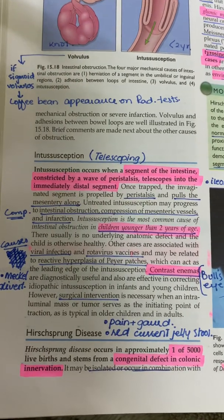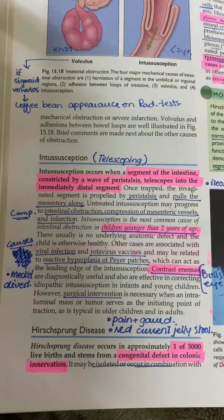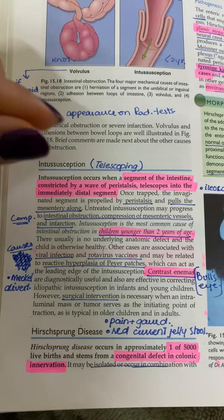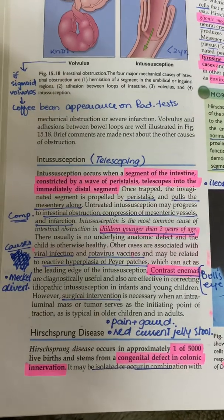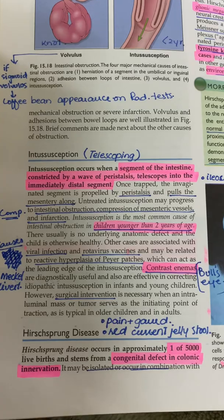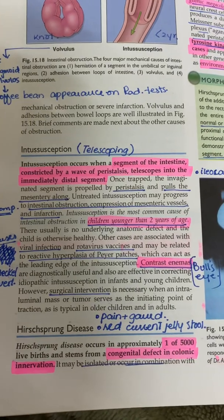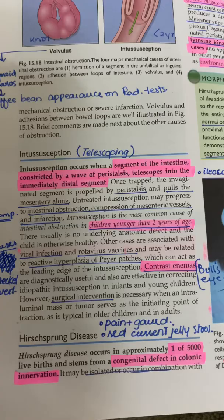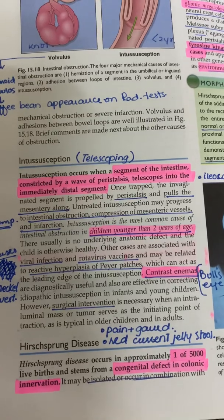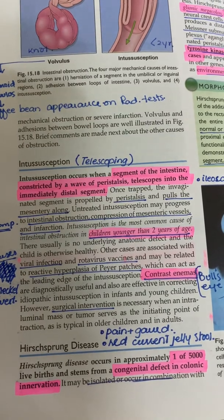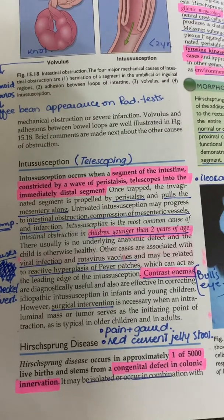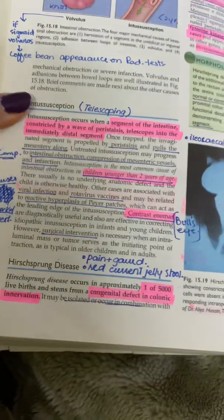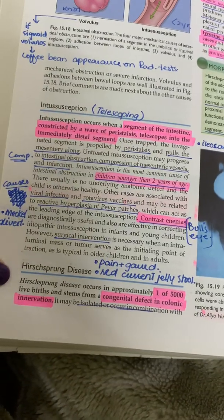Intussusception can also be caused by Meckel's diverticulum if it is reversed and the diverticulum goes into the cecum. It is associated with pain and the child may guard the abdomen. The stool may be red currant jelly in color, which is a very diagnostic finding of intussusception.